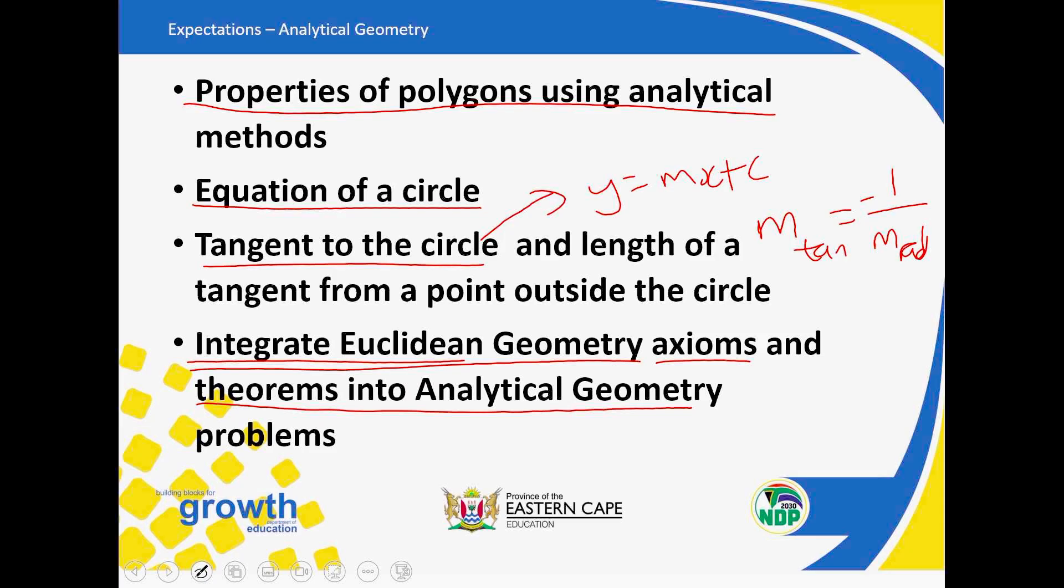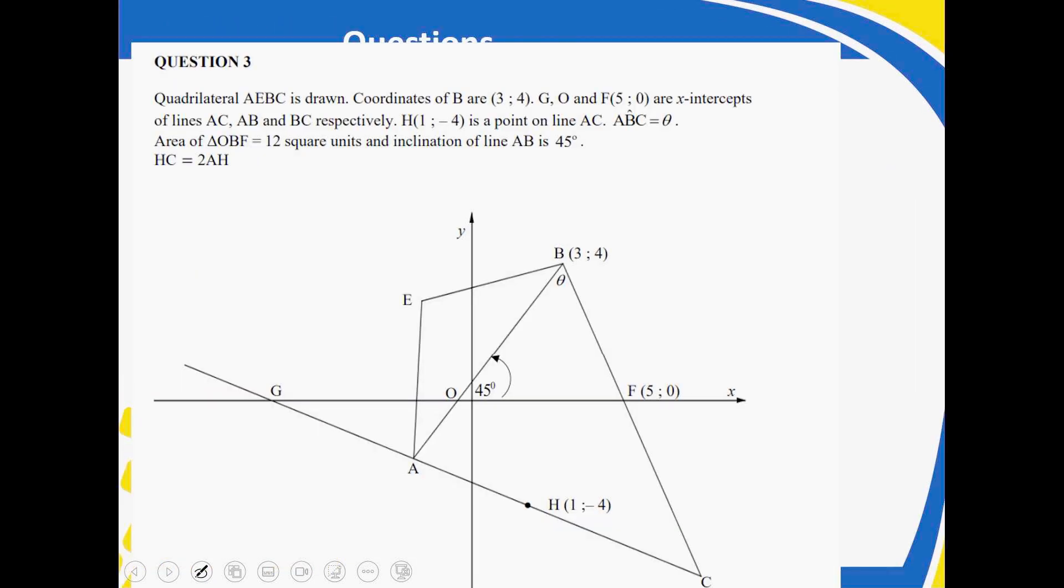Then you must know that the product is minus one. Then you also need to work with Euclidean geometry axioms. Integrate Euclidean geometries and theorems into analytical geometry problems. So you will see, as you do, that you can get a question from another topic that will be used in analytical geometry. So please take note of that and be prepared for that. So let's look at this question that was in your trial paper. So as you'll be answering, you need to look at the key words. Quadrilateral AEBC is drawn. Coordinates of B are 3, 4. So you need to check, are they there?